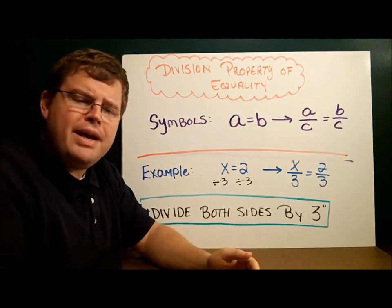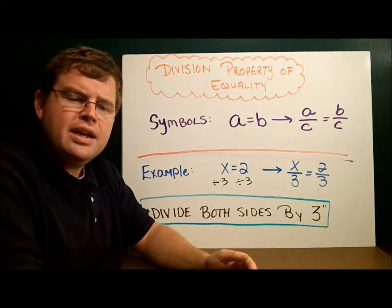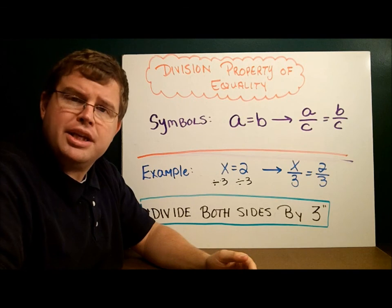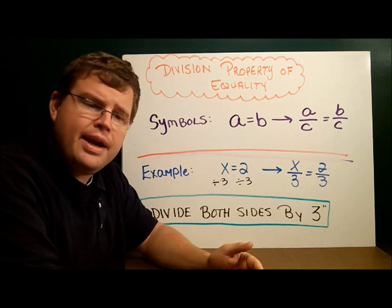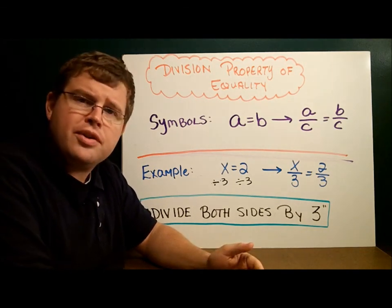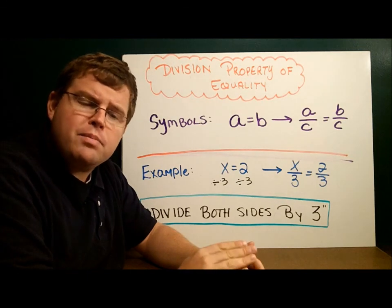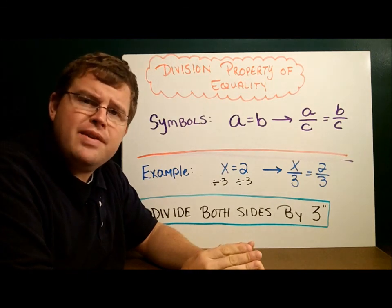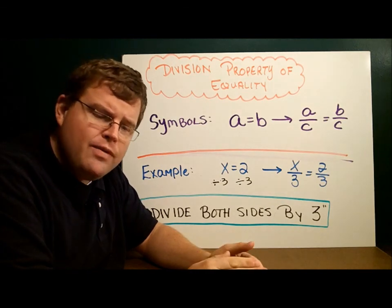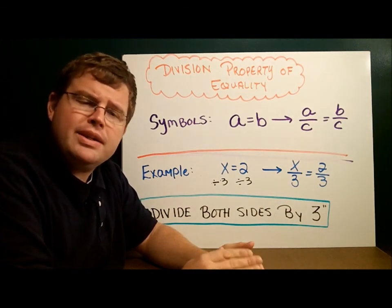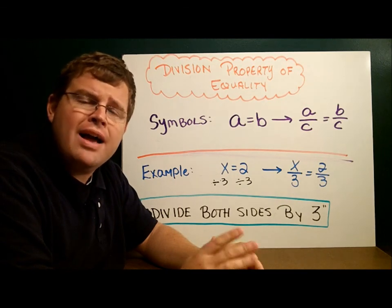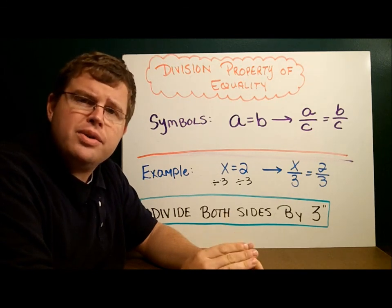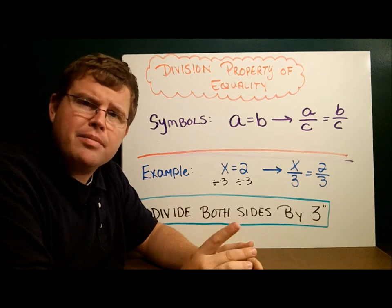So we have the addition, subtraction, multiplication, and division properties of equality. On the next page in your notes, there's an equation: 7x plus 3 equals 31. Please pause the video, solve that equation, and then we'll go through it together and explain why we did each step.